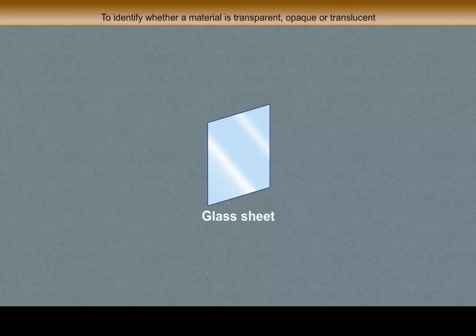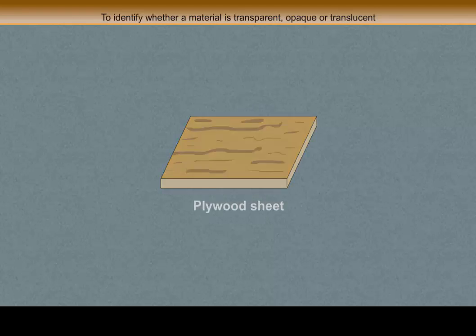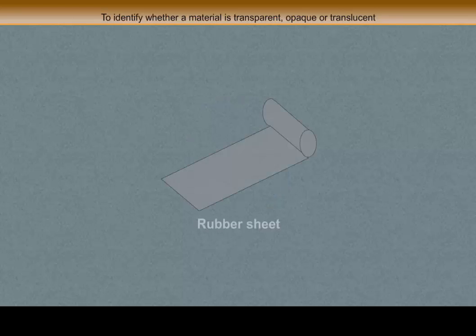Things required: glass sheet, plywood sheet, aluminum foil, compact disc, rubber sheet, wax paper.